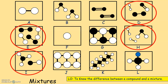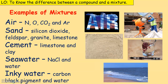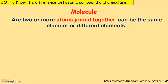A mixture is when elements or compounds are not chemically bonded together. In diagram E you can see different elements present but they are not bonded together — no bond holds them. That's also what you see in D, H, and I. A mixture consists of molecules of elements or compounds that are not chemically bonded but can physically be separated from each other. Examples include air, sand, cement, seawater, and inky water.